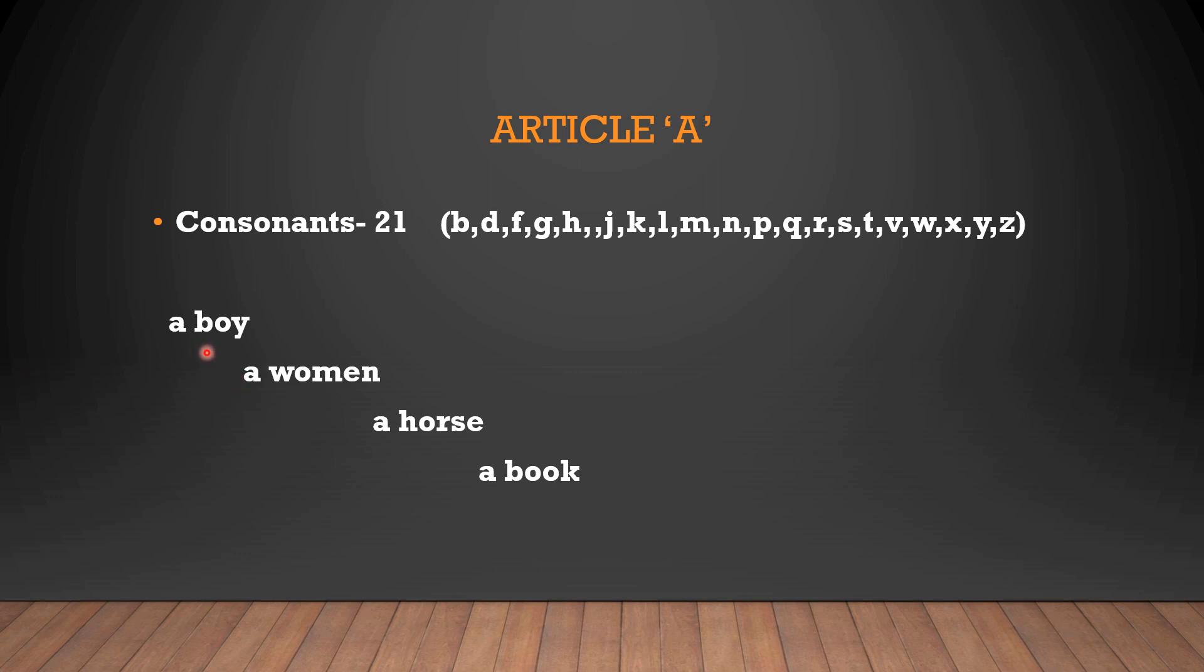So here a boy, whereas B is a consonant sound. A woman, a horse, a book. So in front of all the consonant sounds we use the article called a.